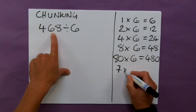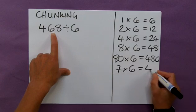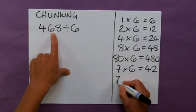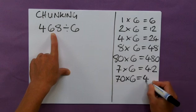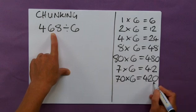So, what happens if I do 7 times 6? Well, that's 42. So, 70 times 6 is equal to 420. Now, that I can use.